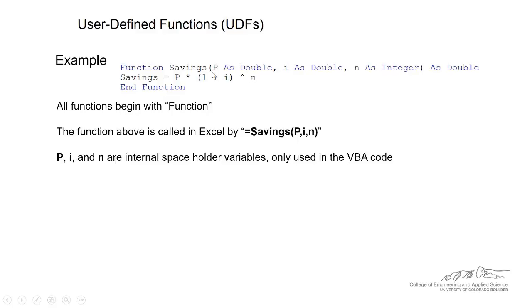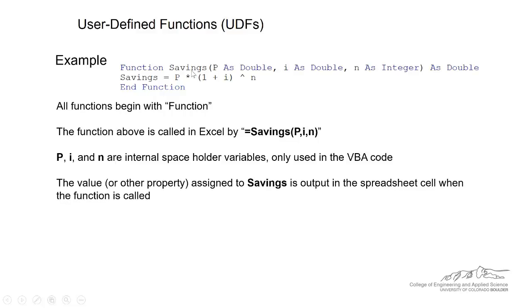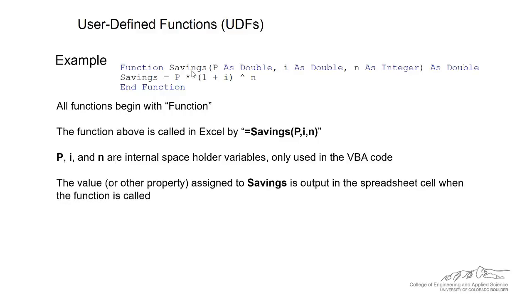I could have just as easily written a, b, and c, as long as I replace that, I have a, b, and c here. They're just used internally in that function. The value assigned to savings is output in the spreadsheet cell when the function is called.